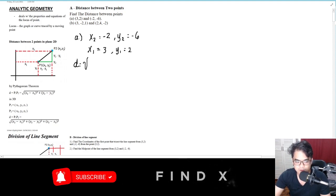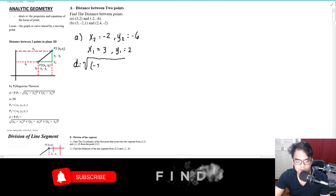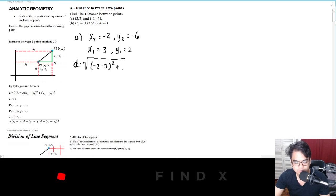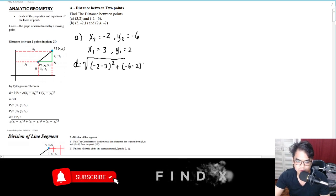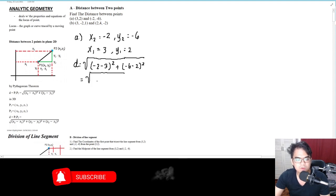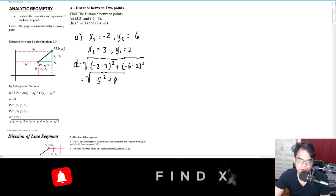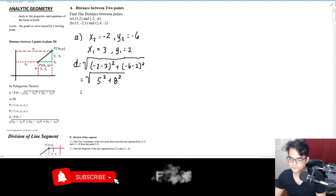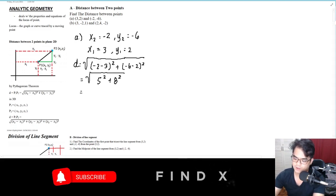Just apply the formula. You have x2 minus x1, so that will be -2 minus 3, squared, plus y2, which is -6 minus y1 which is 2, squared. This becomes square root of negative 5 squared plus 8 squared, so 25 plus 64. The answer for that is 9.43.